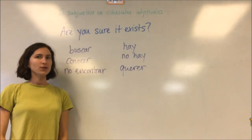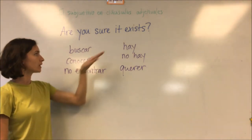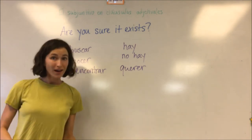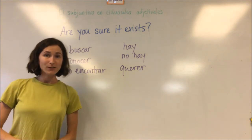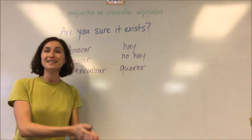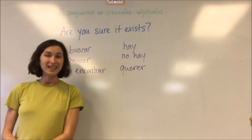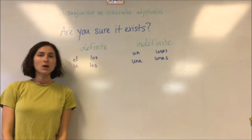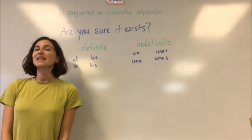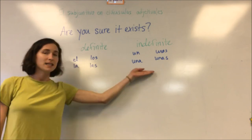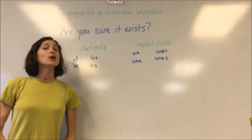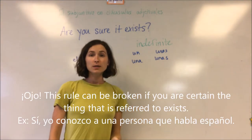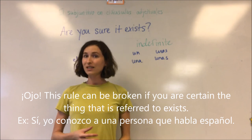Some verbs that commonly precede adjective clauses that need the subjunctive are buscar, conocer, encontrar, hay, no hay, and querer. However, be careful because these can also be used with adjective clauses that do not need the subjunctive. The main difference is whether we know that the thing in the adjective clause exists, or whether there is doubt, uncertainty, or negation of its existence. Our certainty is often signaled by the use of a definite or indefinite article. If we see a definite article, use the indicative. If we see an indefinite article, use the subjunctive.